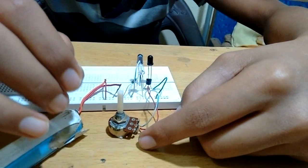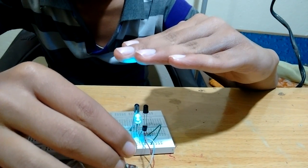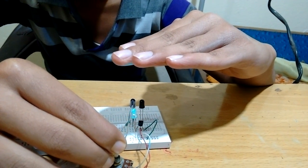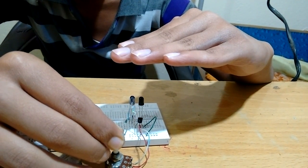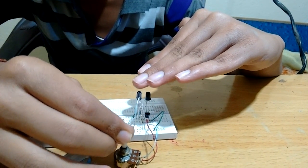If you increase the resistance, the lens or the sensitivity will increase. And as I decrease the resistance, its sensitivity and its lens will automatically decrease.